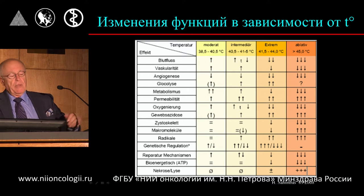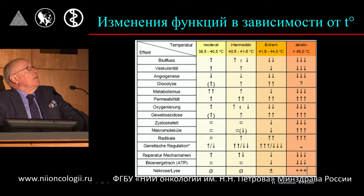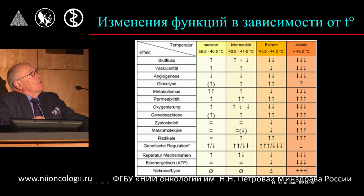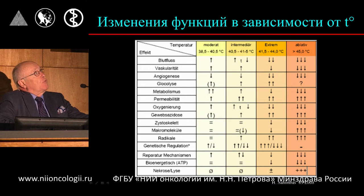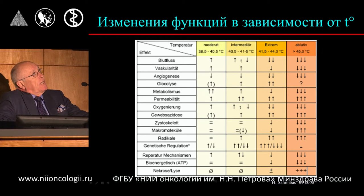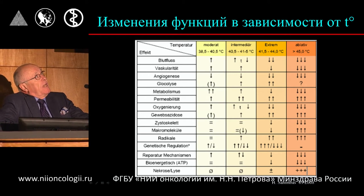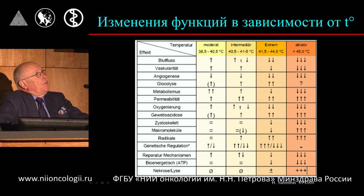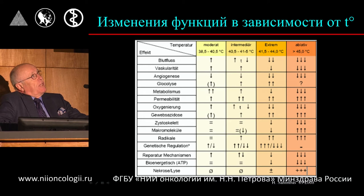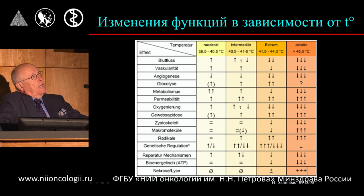By means of MRI we can measure temperature, and measuring the temperature is a very important issue. I will try to explain this by means of this graph — how the function changes depending on temperature. If there is an increase from 38.5 to 40.5 degrees centigrade, you can see from these columns at 40.5 to 41.5 and further on, that when we increase the temperature, blood circulation also increases, and vice versa: if the temperature goes down, blood circulation is also decreased. Subsequently, the volume of vascularity is increased and vice versa with a decrease of temperature.